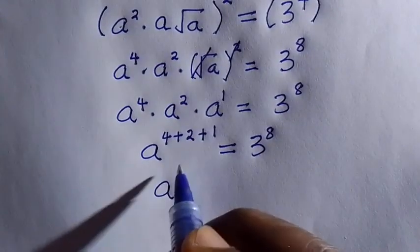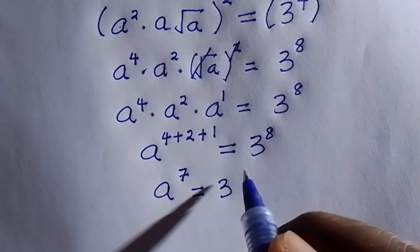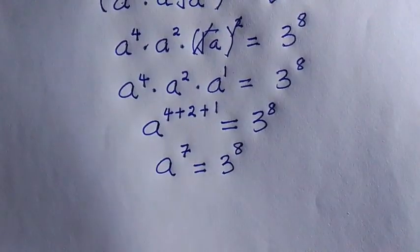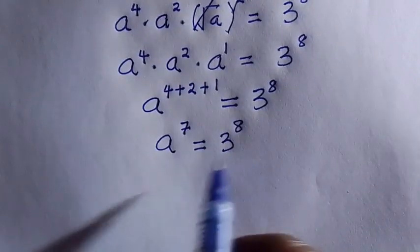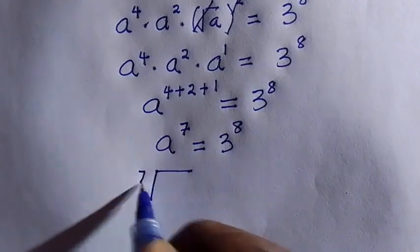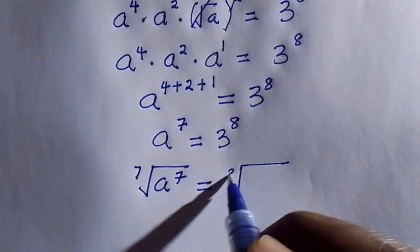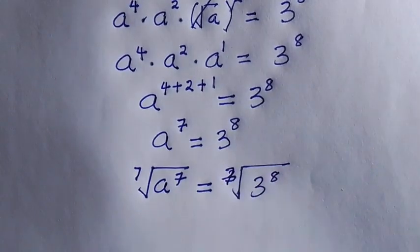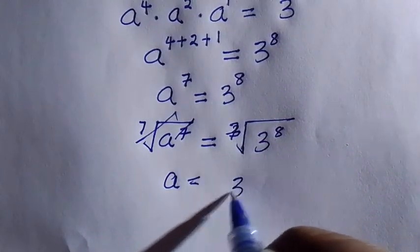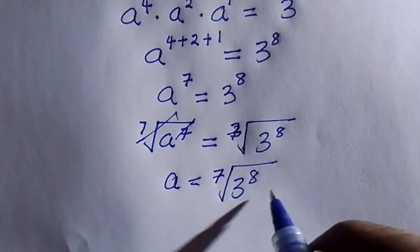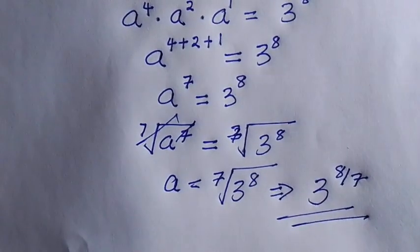So here we have a to the power of 4 plus 2 plus 1, which gives us 7, equals 3 to the power of 8. To get the value of a, since we only need the real solutions and not the complex solution, we take the 7th root of both sides. By doing that we have the 7th root of a to the power of 7 equals the 7th root of 3 to the power of 8. When these cancel we get the value of a, which equals 3 to the power of 8 over 7. And here is the result that satisfies this problem.